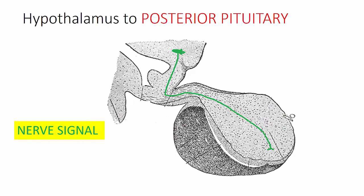The hypothalamus connects to the posterior pituitary using nerve tracks, so this is a neural connection. The hormones are made in the hypothalamus and stored in the posterior pituitary. A nerve signal from the hypothalamus triggers the release of these hormones.